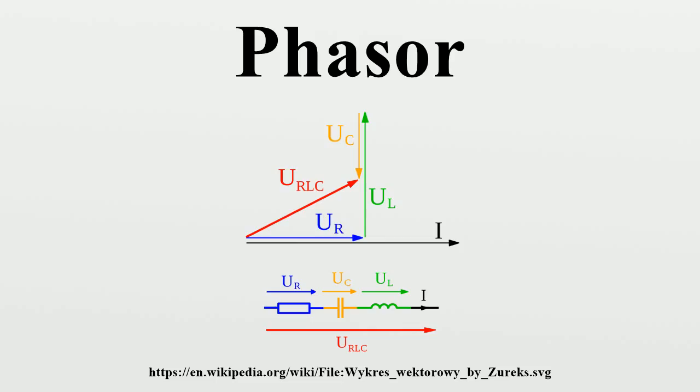The phasor transform thus allows the analysis of the AC steady state of RLC circuits by solving simple algebraic equations in the phasor domain instead of solving differential equations in the time domain. The originator of the phasor transform was Charles Proteus Steinmetz working at General Electric in the late 19th century.